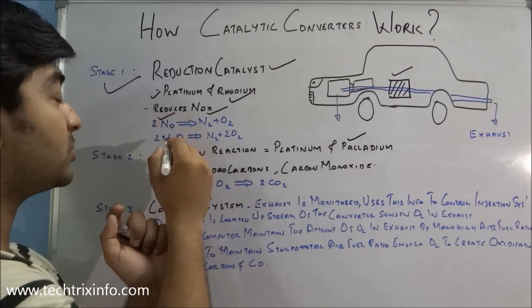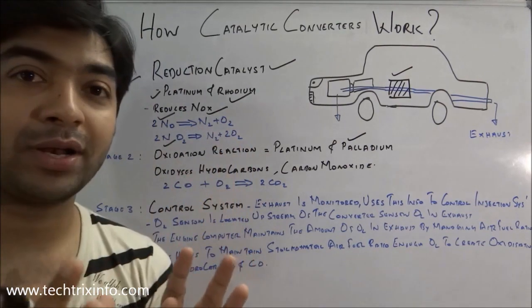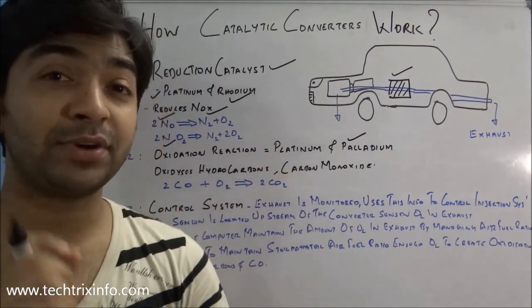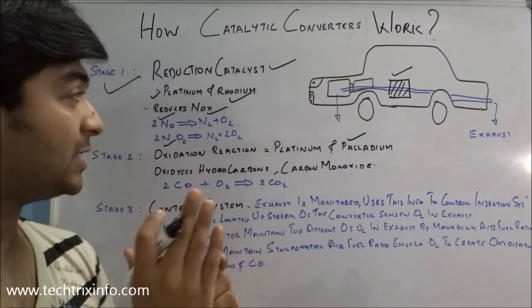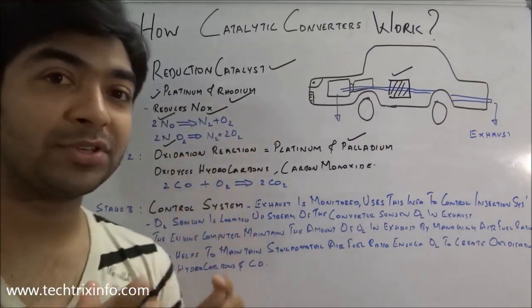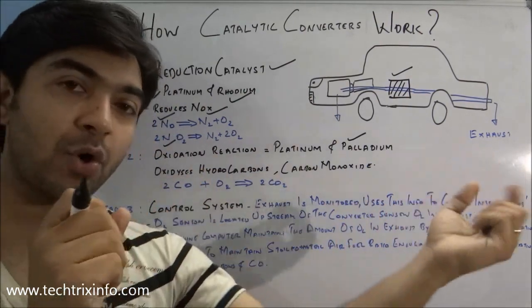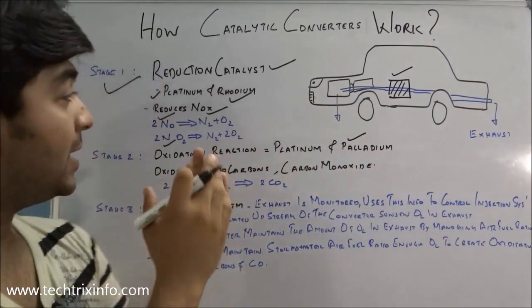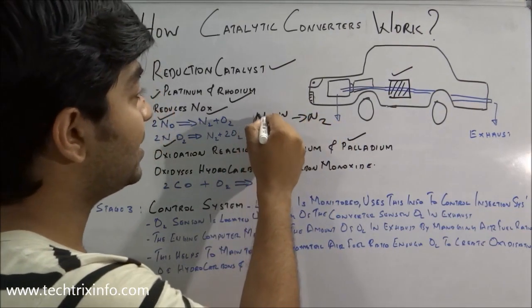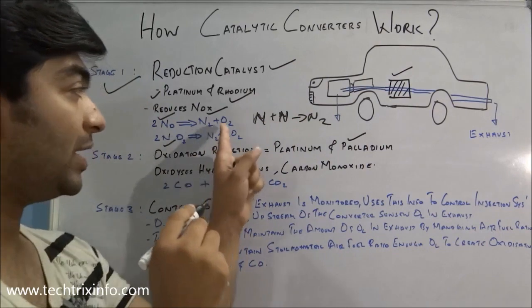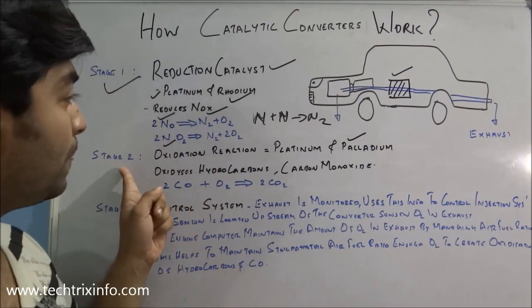Nitrogen monoxide and nitrogen dioxide are very harmful components, whereas nitrogen itself is not harmful — air contains about 78% nitrogen. What platinum and rhodium do is split the nitrogen and oxygen, hold the nitrogen, and release the oxygen back toward the exhaust. The nitrogen atoms then combine (N + N) to form N₂, which is released as harmless nitrogen gas. That completes stage one.